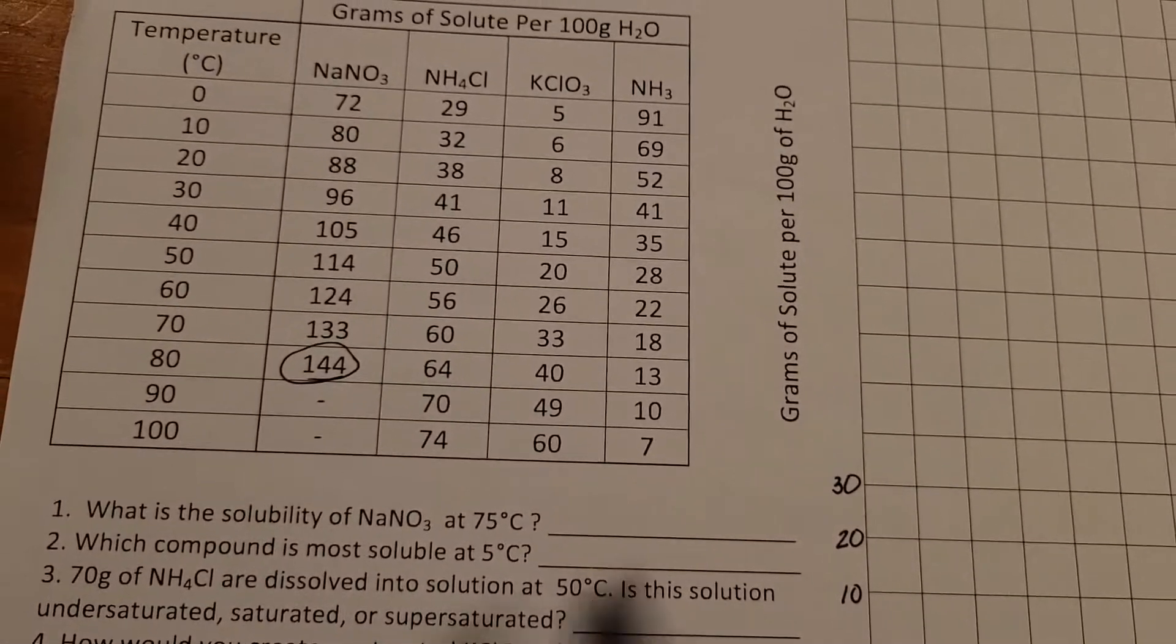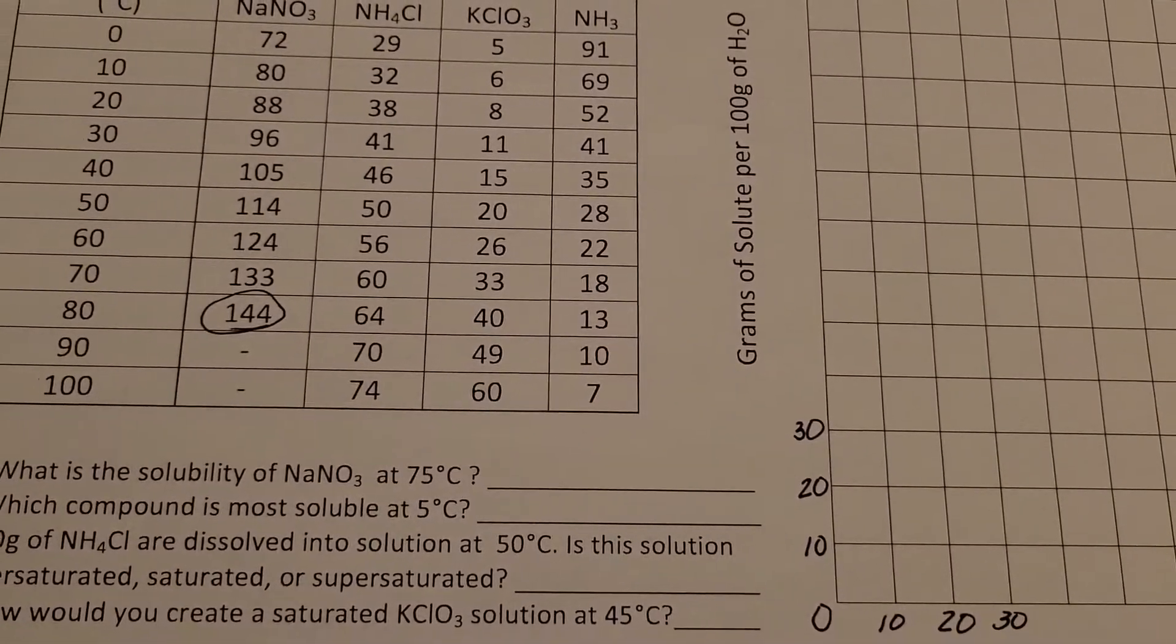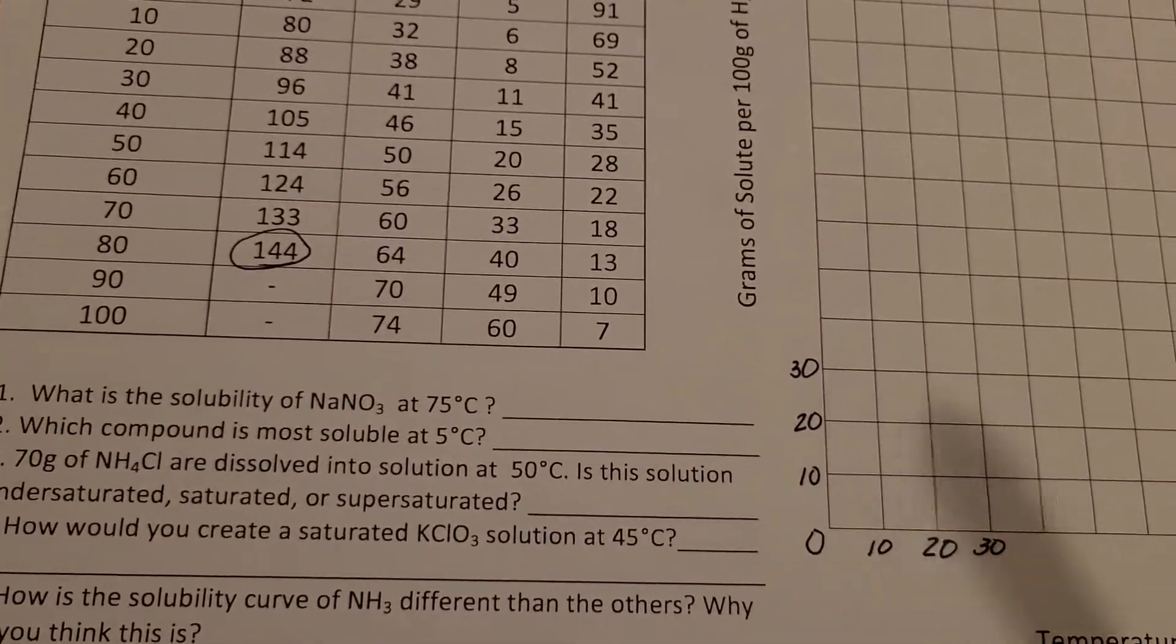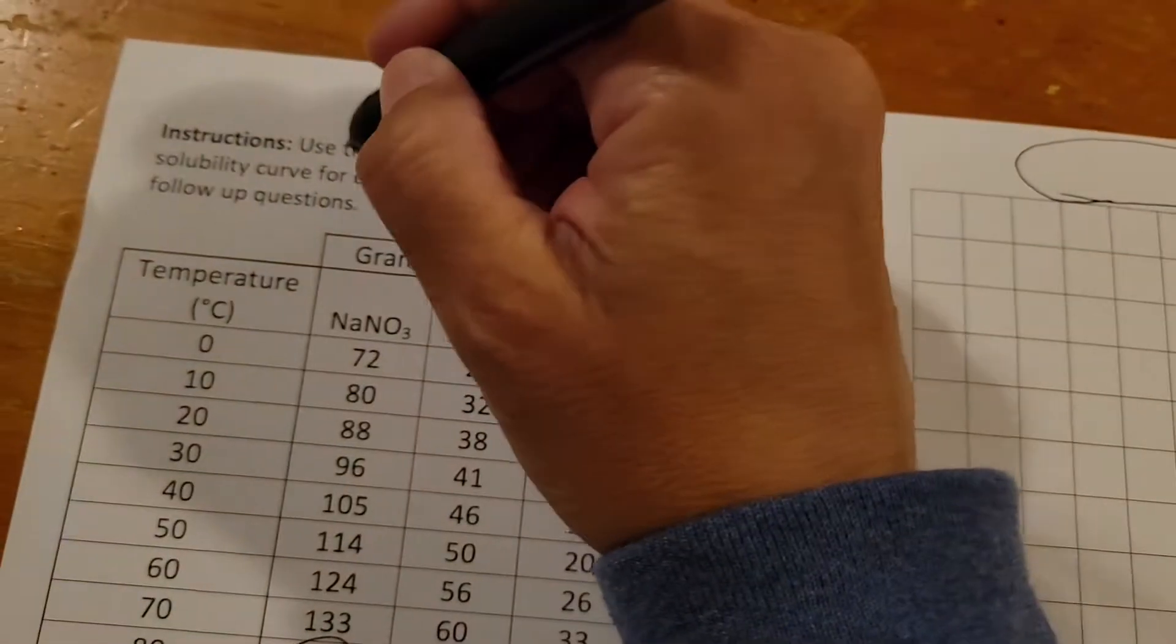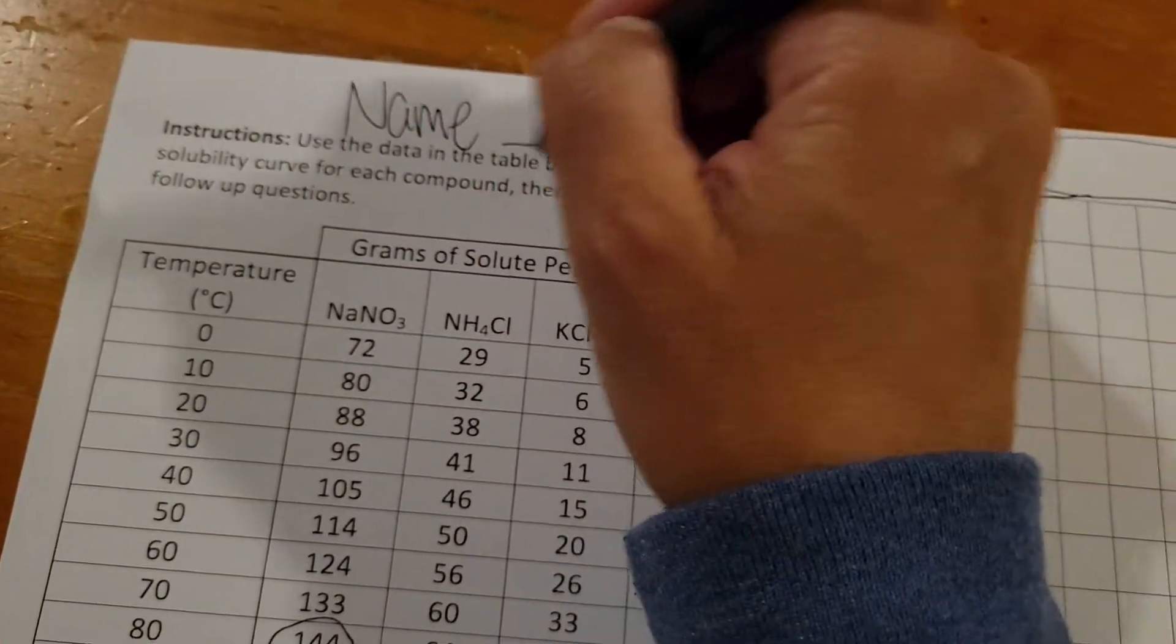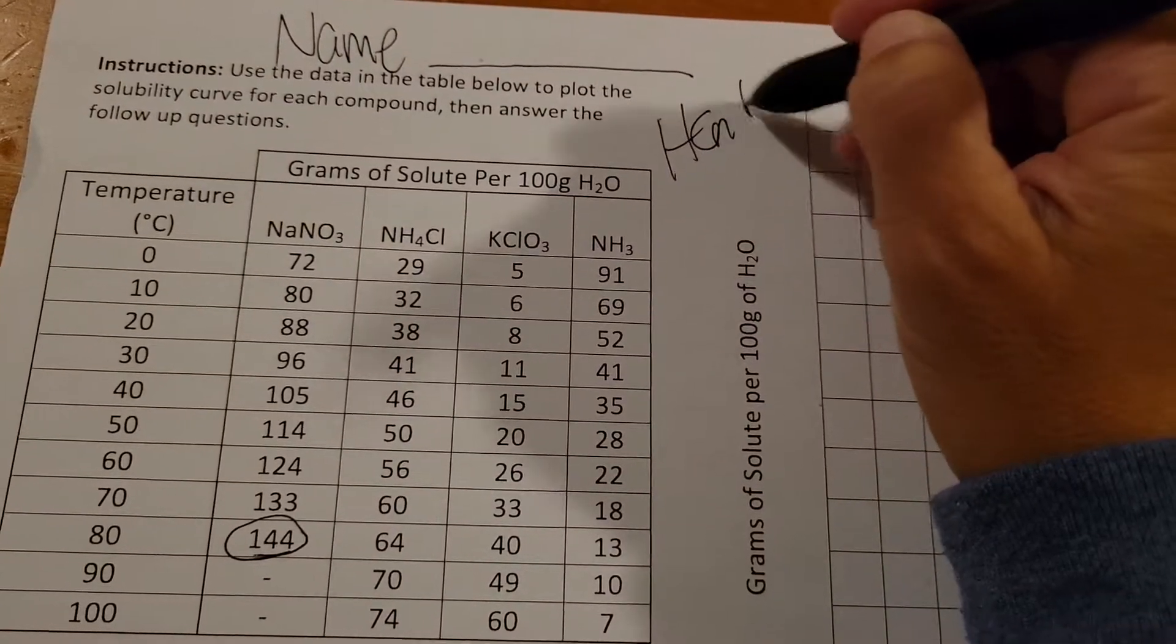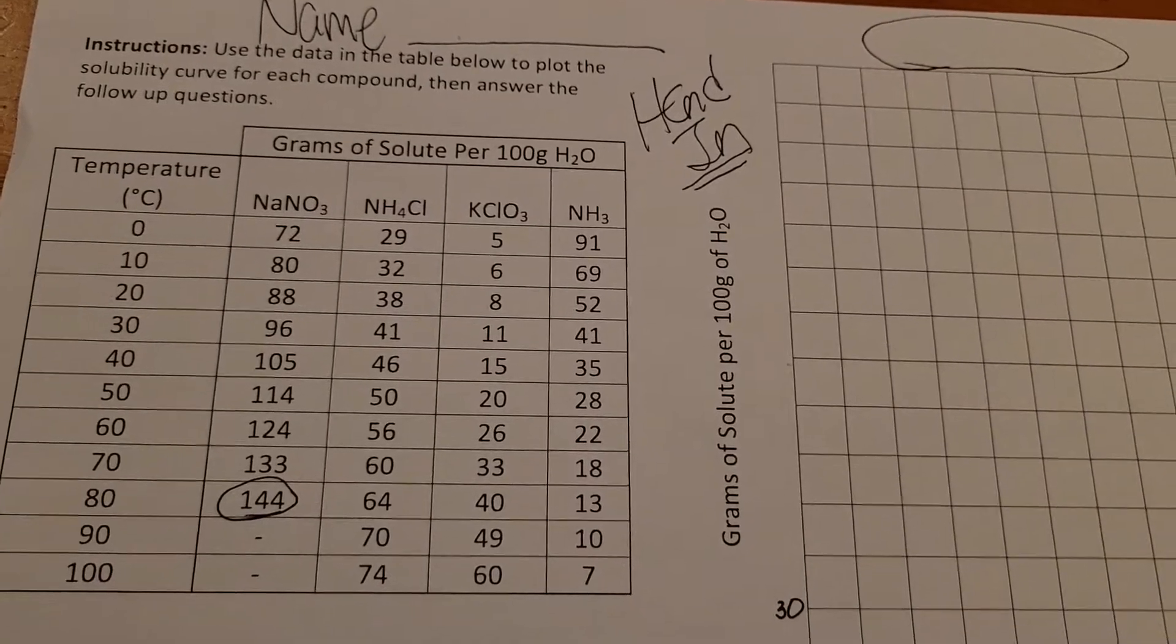When you're done with all of that, you've got your labels, you've labeled your axes correctly, you've plotted all four lines in four different colors, answered your questions, make sure that it has your name on the top and go ahead and hand in to Mr. Vance.